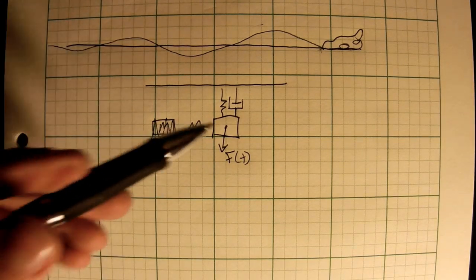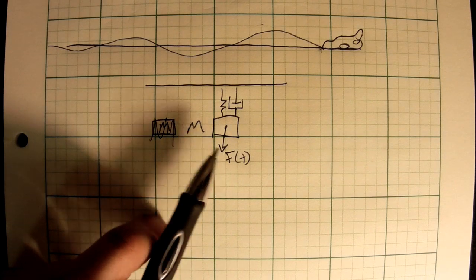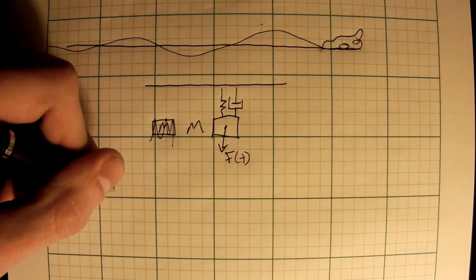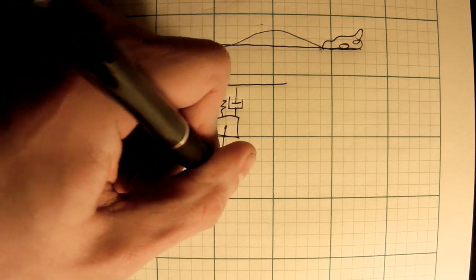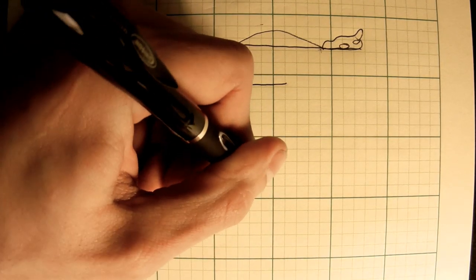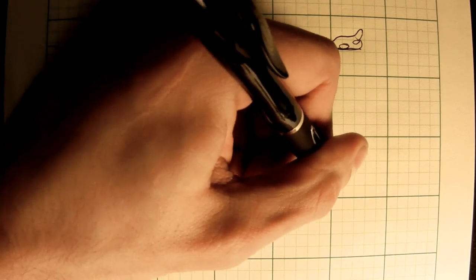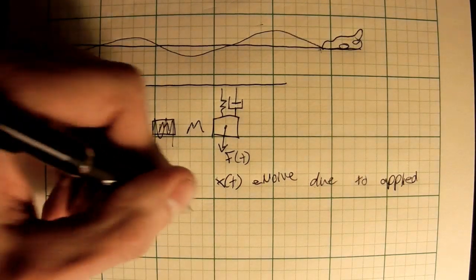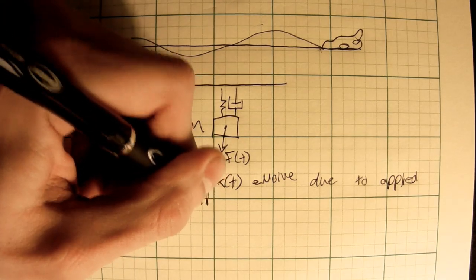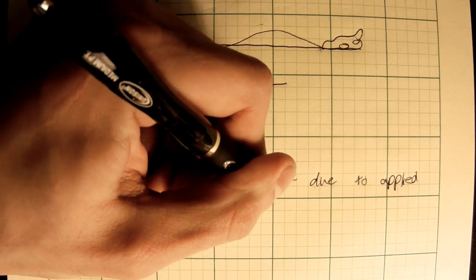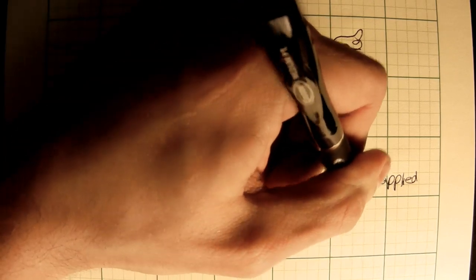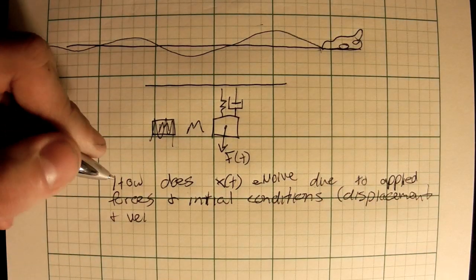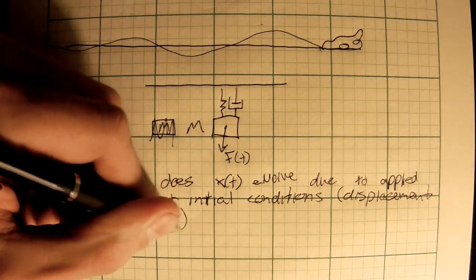So let's begin by deriving an equation of motion for this particular case. So we're going to ask ourself: How does x of t evolve due to applied forces and some initial conditions as well such as displacement and velocity?